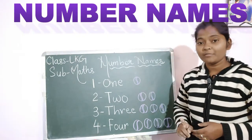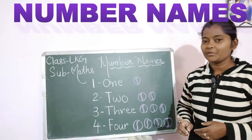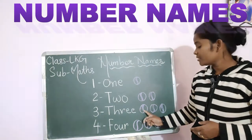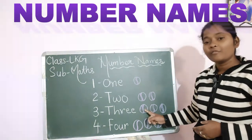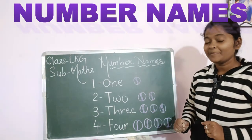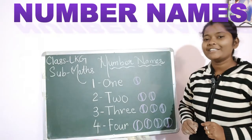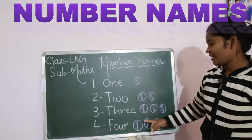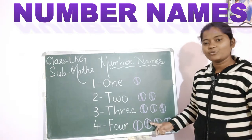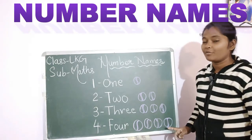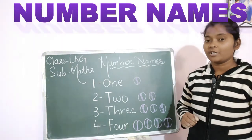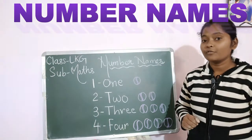And what is the number name of 2? T-W-O — 2. How many balls are here? 1, 2, 3. And what is the number name of 3? T-H-R-E-E — 3. How many balls are here now? 1, 2, 3, 4. Very good. What is the number name of 4? F-O-U-R — 4.